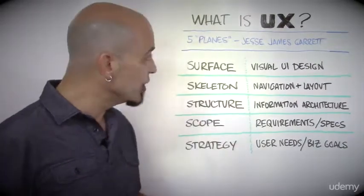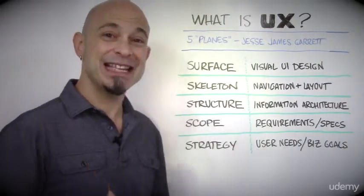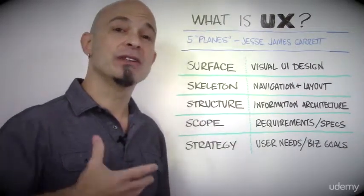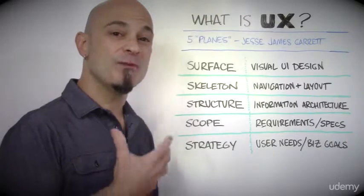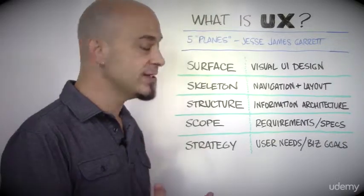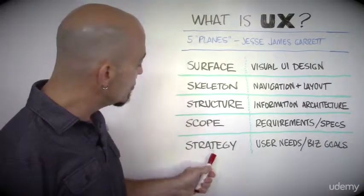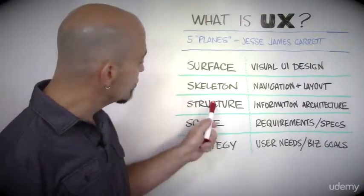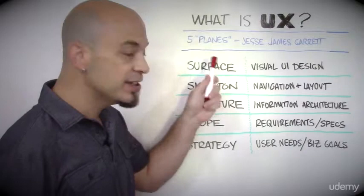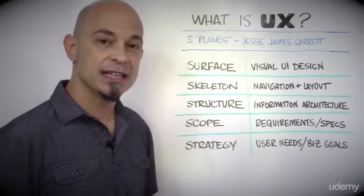What you're looking at right here is that model. Garrett came up with five planes of user experience: strategy, scope, structure, skeleton, and surface.